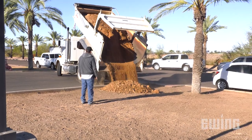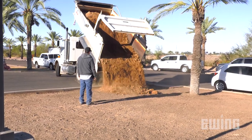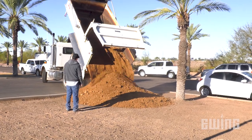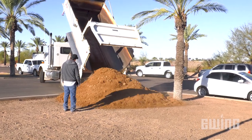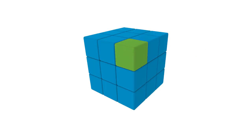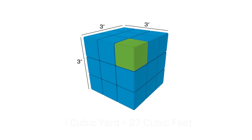The first thing to understand is the unit of measurement used. Bagged material is typically measured in cubic feet, while bulk is measured in cubic yards. A cubic foot is the volume of material that can fit into a space that is 1 foot high by 1 foot wide by 1 foot deep. Since 1 yard is equal to 3 feet, a cubic yard would be 3 feet high, 3 feet wide, and 3 feet deep, or 27 total cubic feet.